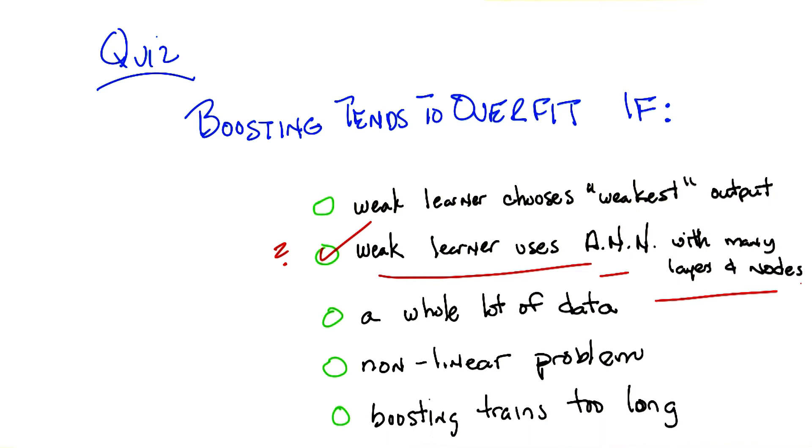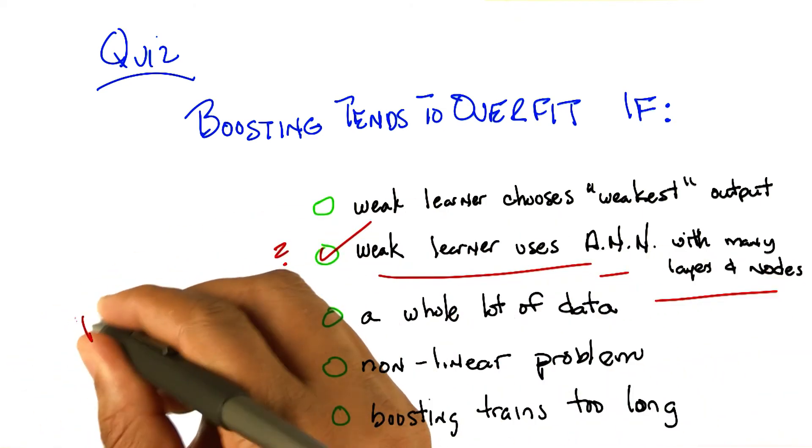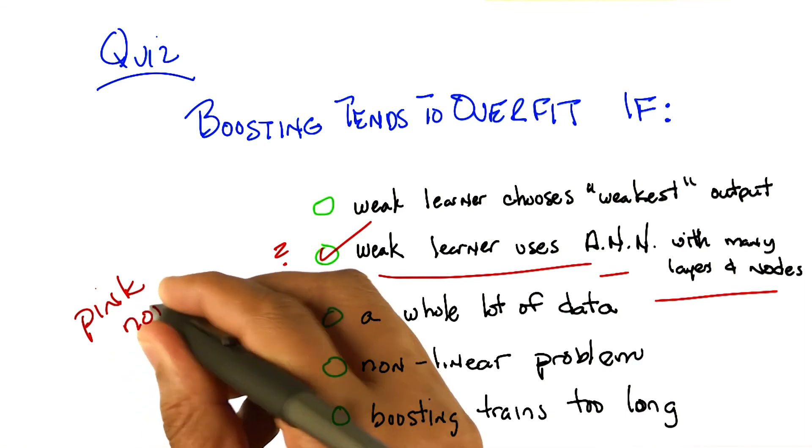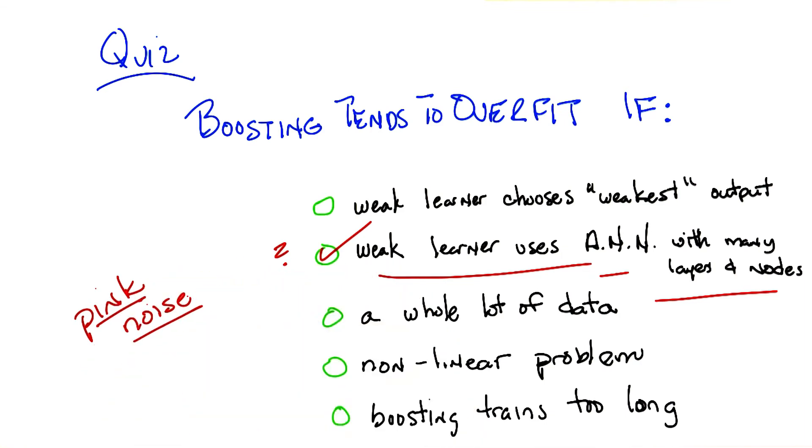Let me just throw one more thing in here. There are a couple of other cases where boosting tends to overfit. The one that matters the most, or comes up the most, is in the case of pink noise. Did you say pink noise? I said pink noise. I even wrote it in red which looks like pink. It's a strong pink as opposed to a weak pink. I'm sorry, there's no way for that to be obvious from what we've talked about. But as a practical matter, pink noise tends to cause boosting to overfit.